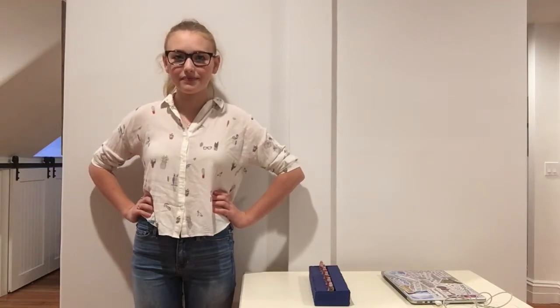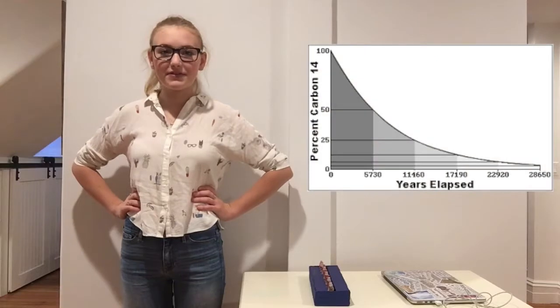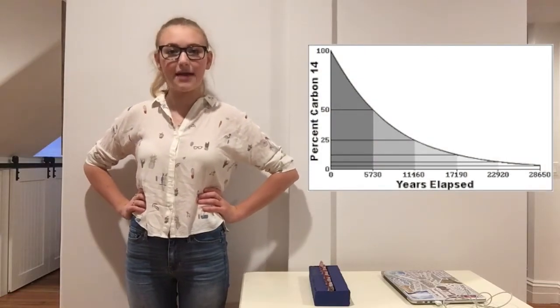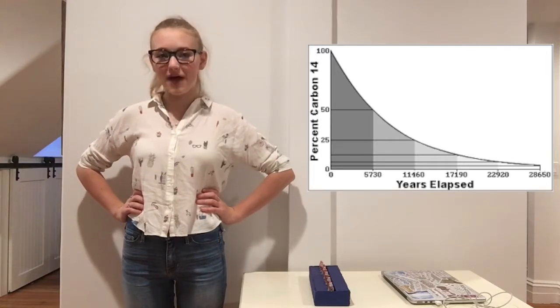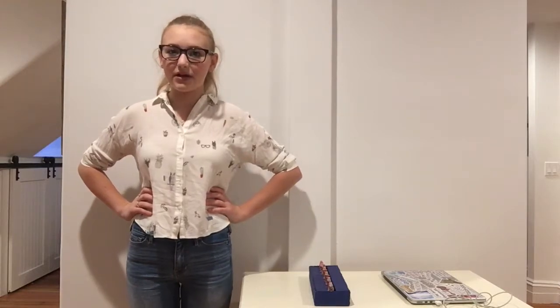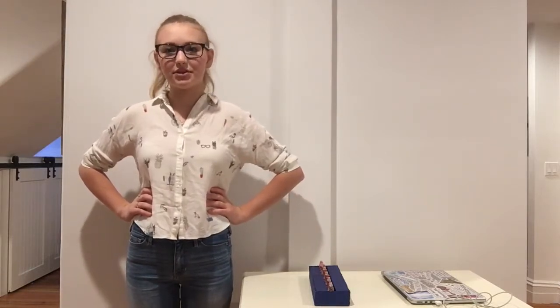Carbon-12 is stable. Therefore, the amount of it stays the same in the organism, even though it is getting older and older. Carbon-14, however, is unstable. This means that it decays. The amount of decay is measured by using the half-life of carbon. A half-life is the amount of time that it takes for half of the isotopes in an organism to decay. The half-life of carbon is about 5,730 years.